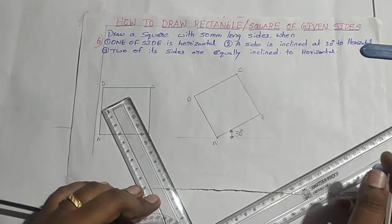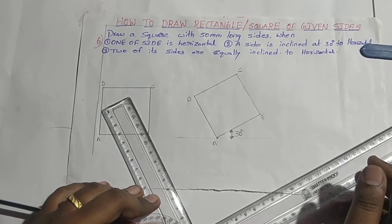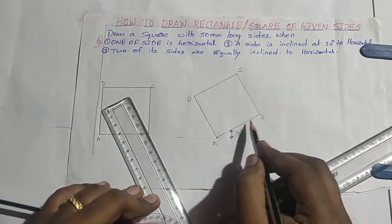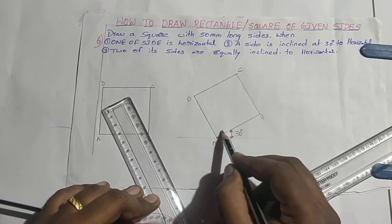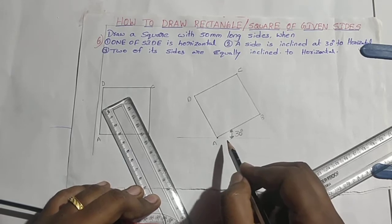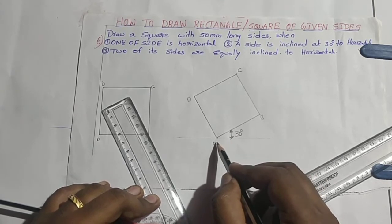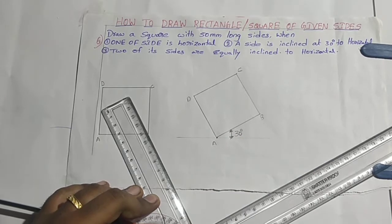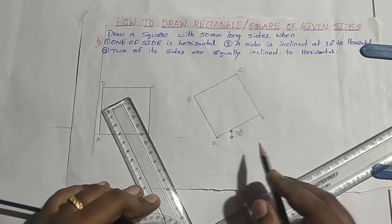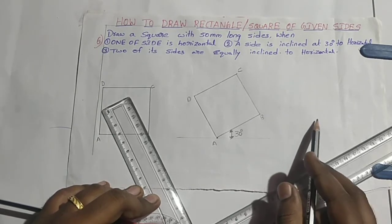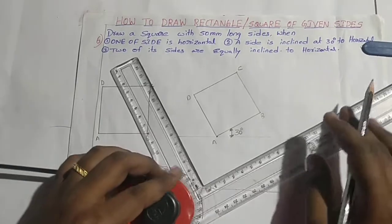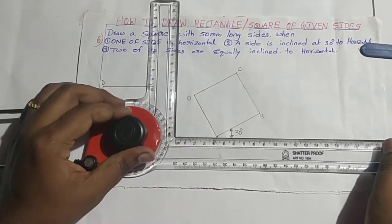The third condition is that two of its sides are equally inclined to the horizontal. The total angle is 180 degrees, and the angle between two adjacent sides of a square is 90 degrees, so the remaining angle is 90 degrees. Dividing equally means 45 degrees each side. So we have to draw one side at 45 degrees. The same procedure used in the second condition is used here, but instead of 30 degrees, we now make an angle of 45 degrees.